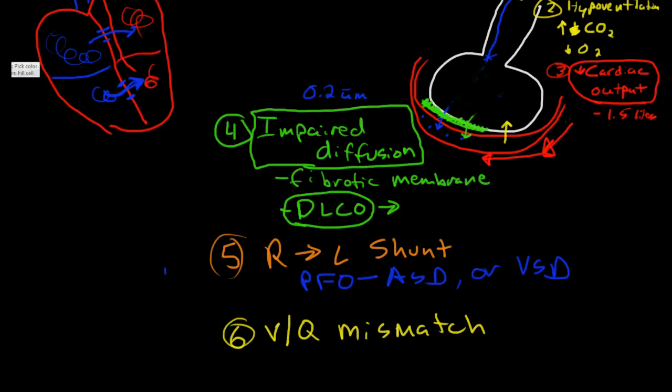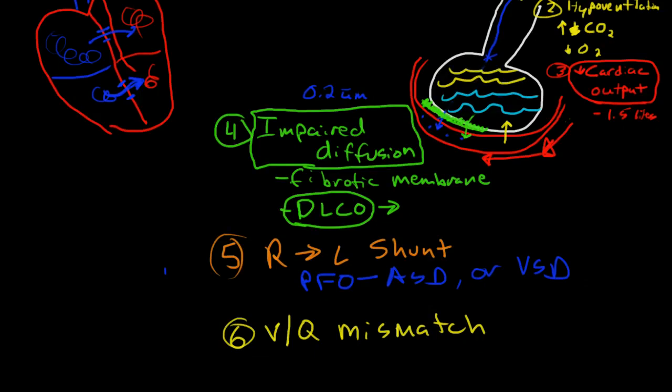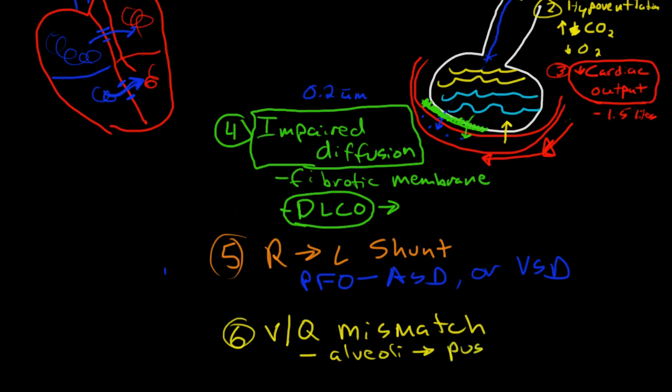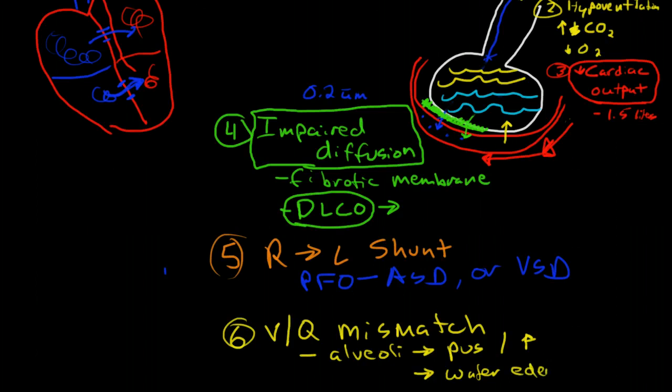So in the most typical cases, this alveoli is filled with fluid or pus from infection. So it could be filled with pus. And it's still being perfused because of vasodilation from the inflammatory mediators, or the alveoli may be filled with water because of edema, because of CHF.